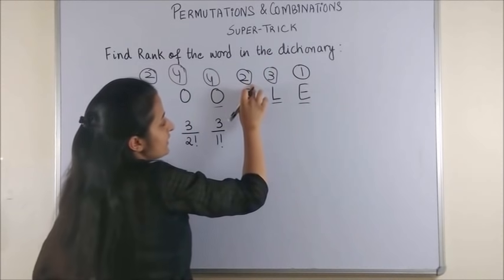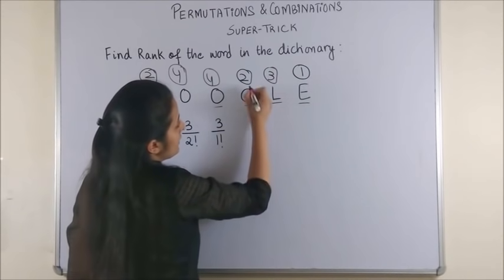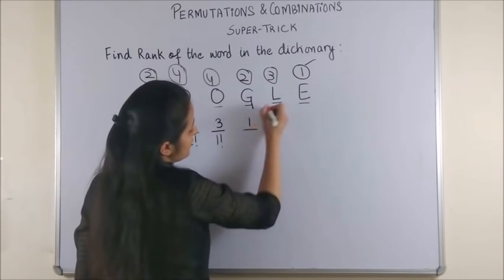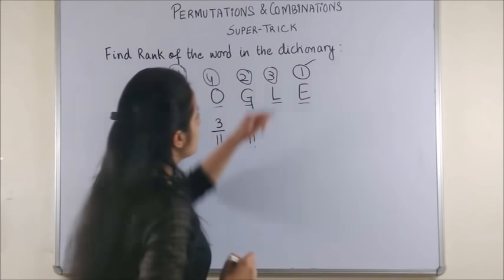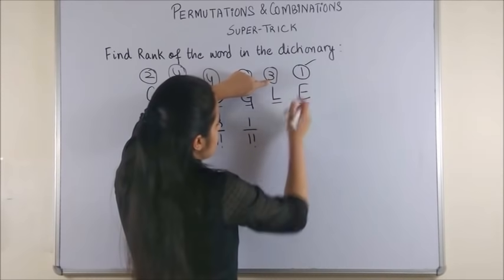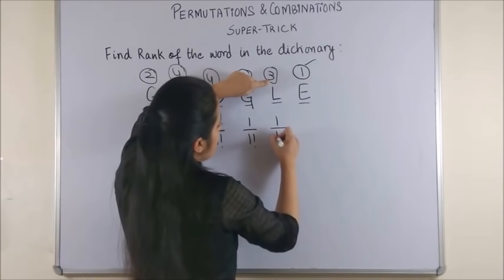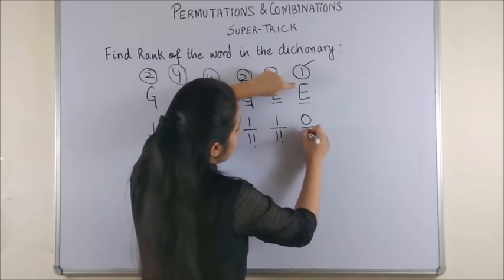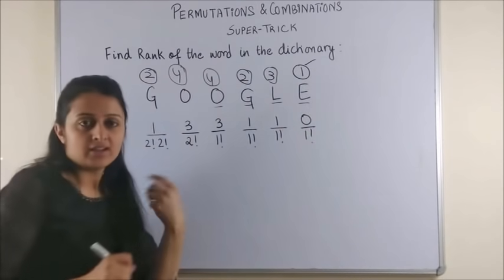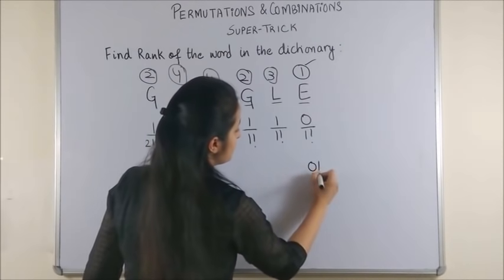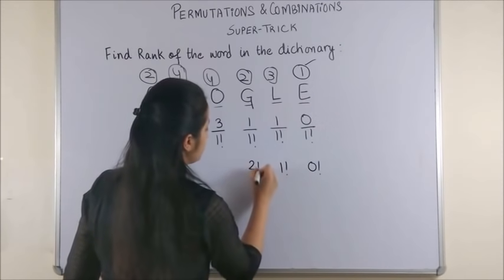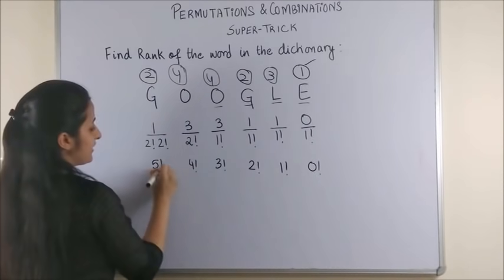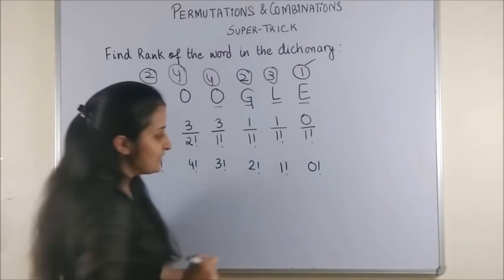Now, for this O also it would be 3. But then this time you see from this O, G, E there are no repetitions. So, it's 1 factorial. Next, moving to G. There is only one alphabet which has a rank lower than 2. So we write 1 and there are no repetitions. Moving to L. Again, there is one alphabet. So, 1 upon 1 factorial and E has nothing lower than that. Now, once again we have 0 factorial, 1 factorial, 2 factorial, 3 factorial, 4 factorial, 5 factorial.